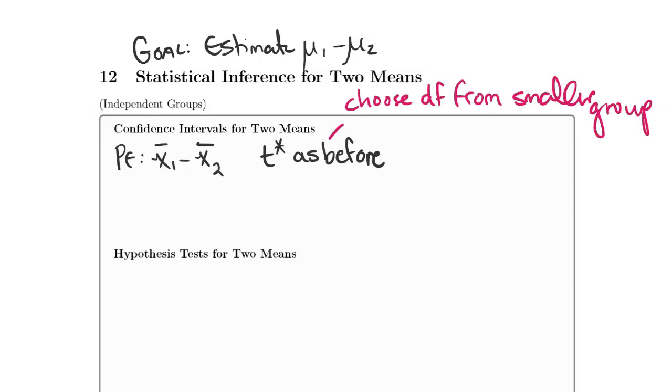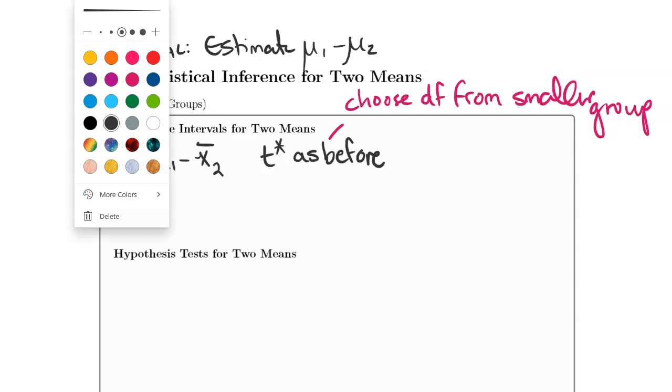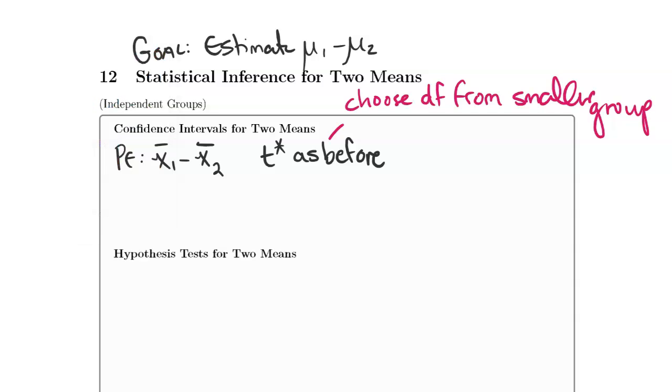I want to make the point that you should choose DF from the smaller group. If you have a choice of DF, you should always go with the more conservative option, so you're not estimating more than you're supposed to be. As far as the standard error is concerned, if you think back to the two proportion case, we took the variances of the portions of each group, added those together, and took the square root.